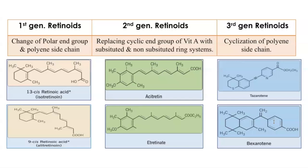The second generation retinoids are also known as mono-aromatic — 'mono' meaning one, 'aromatic' meaning the cyclic end-group is substituted with a ring system. These are synthesized by replacing the cyclic end-group of vitamin A with various ring systems. The two key compounds are acitretin and etretinate, the latter no longer in production due to its significantly long half-life. In the third generation, these are considered polyaromatic, formed through cyclization of the polyene side chain. Key compounds include tazarotene, adapalene, and topical bexarotene.